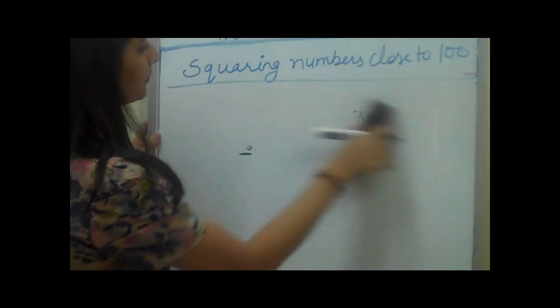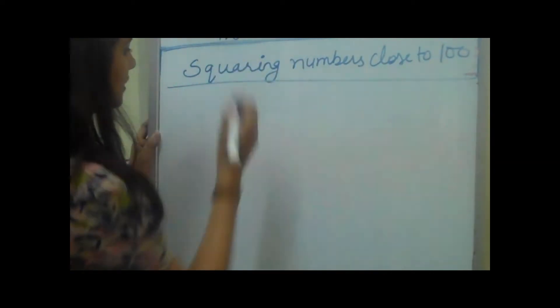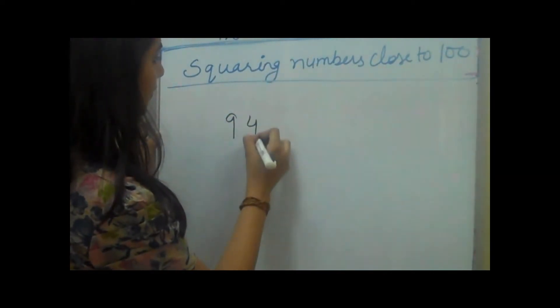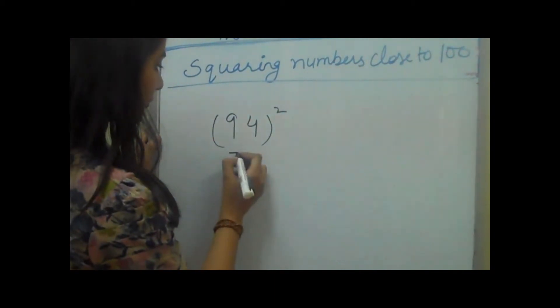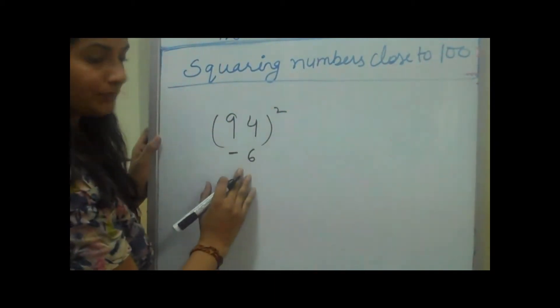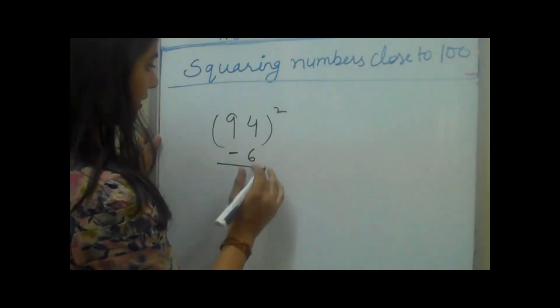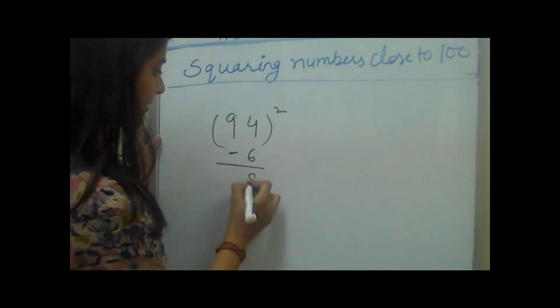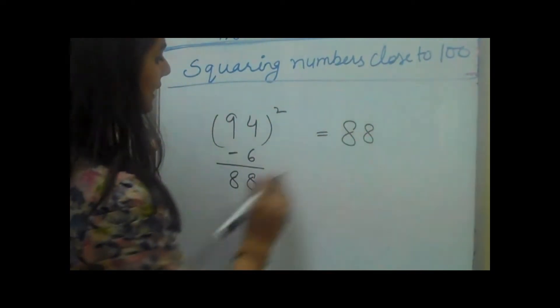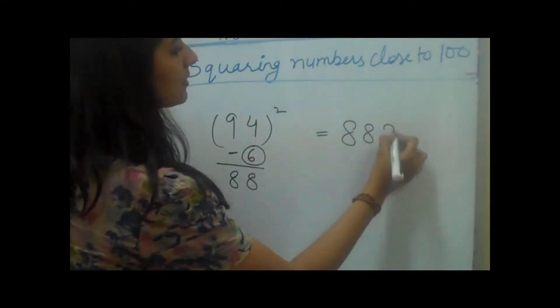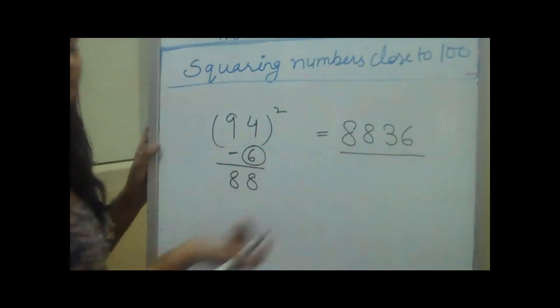Let's take another example. If we have a number 94 which is less than 100, so we will subtract 6 from here. If we subtract 6 from here it makes 88. We put 88 here. And then we will square this number which makes 36. Simple.